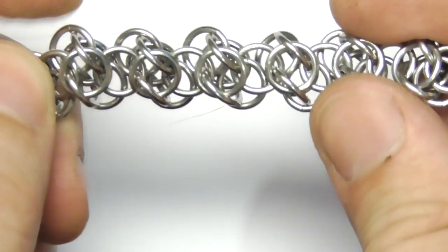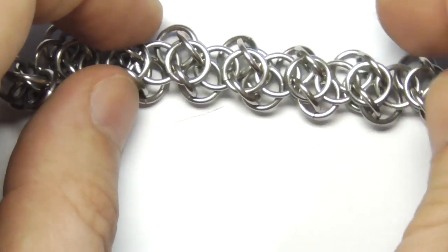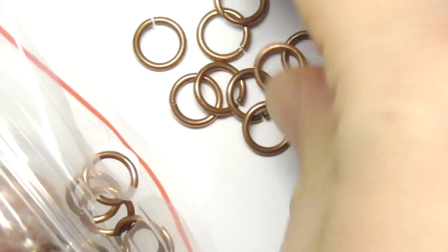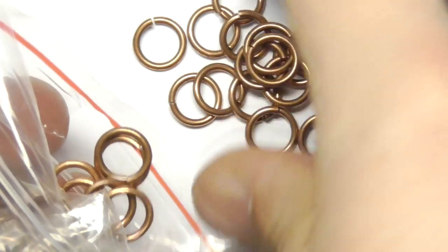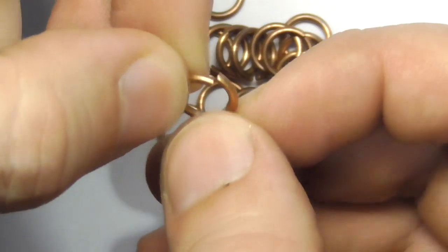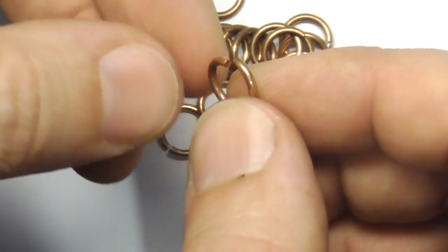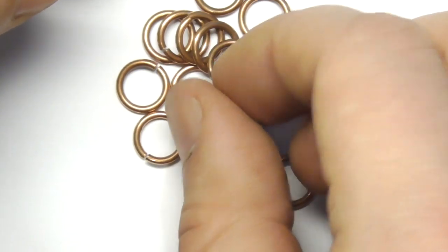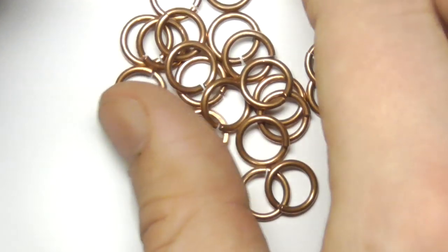So this sample is made of stainless steel but for this video I will use copper rings. These rings are made of wire with a diameter of 1.4 millimeters and inner diameter of the rings is slightly bigger than 7 millimeters. So AR becomes something around 5.